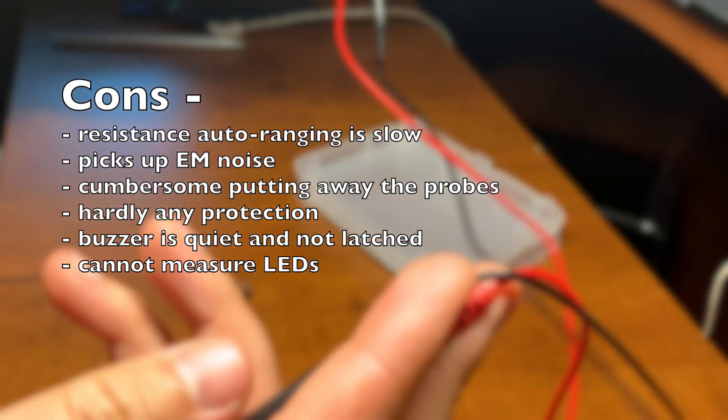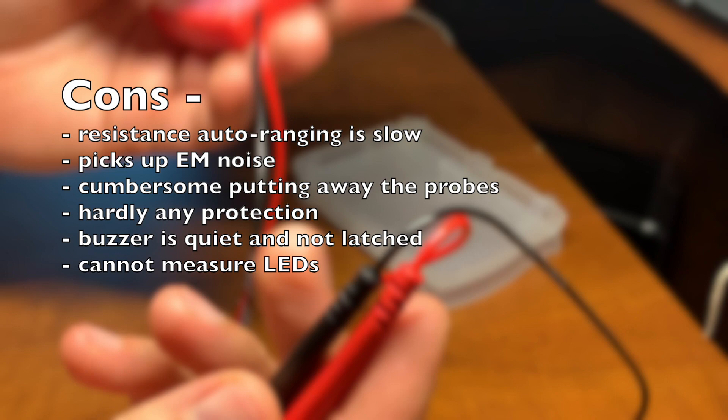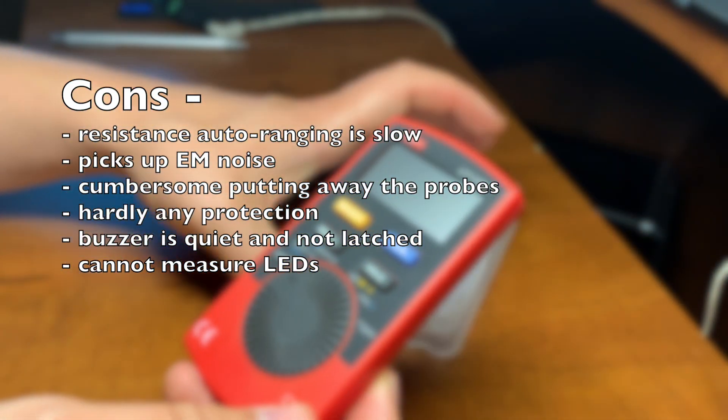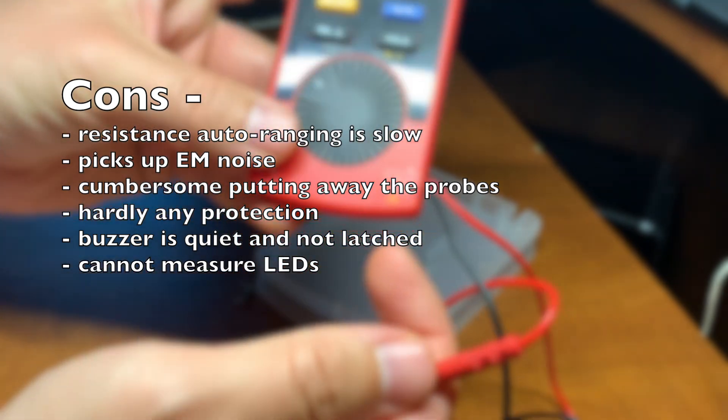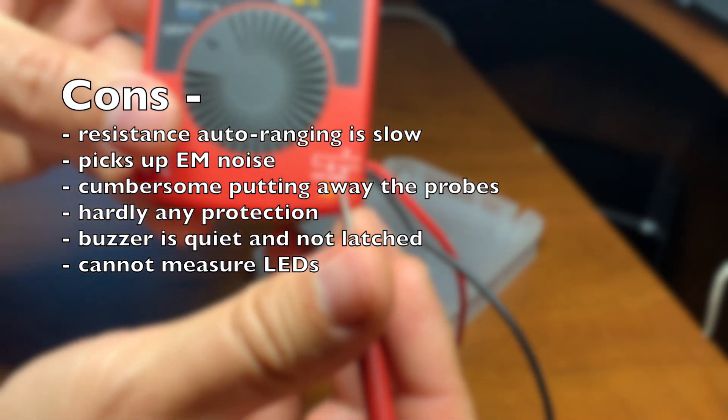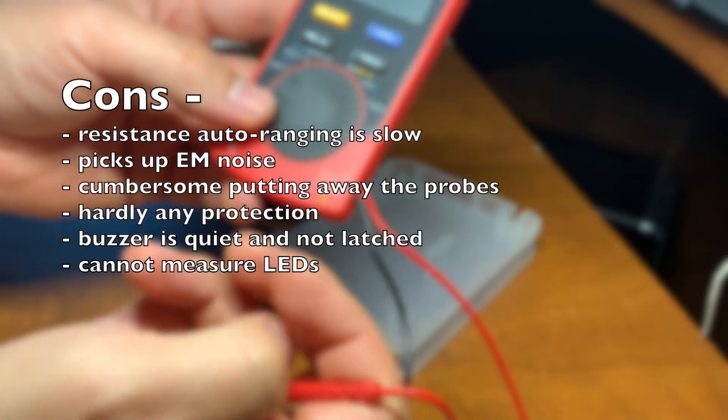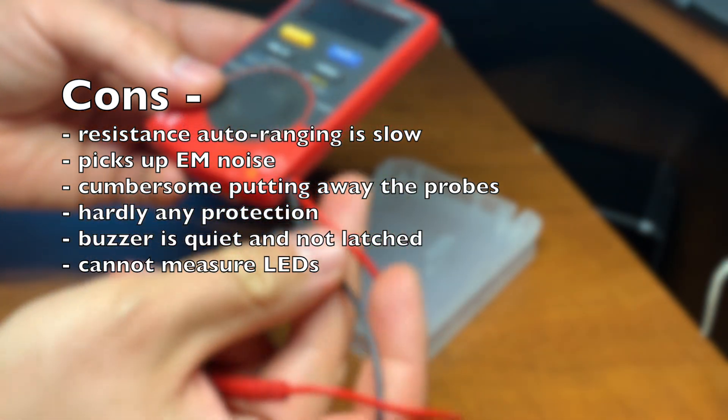The cables inside the probes are very thin, so they pick up a lot of EM noise. It is cumbersome putting away the cables after you're done, and there is hardly any protection. Although it says here that it's CAT2 600V rated, I wouldn't come near 200V, never mind 600V with this multimeter.